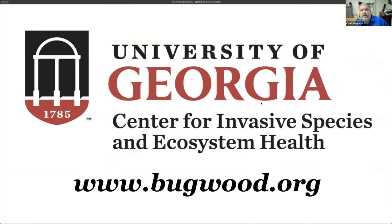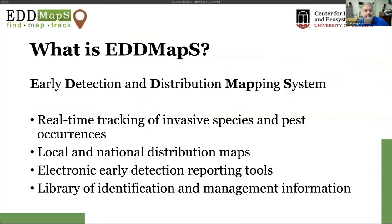EDMAPS runs out of the University of Georgia Center for Invasive Species and Ecosystem Health — our web address is bugwood.org. For those new to it, EDMAPS stands for Early Detection and Distribution Mapping System. It's really two things: a reporting system to make it very easy to report an invasive species, and the ability for that data to come out in many different formats — adding to an existing library of identification and management information.